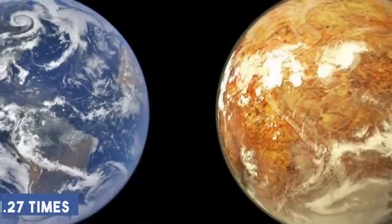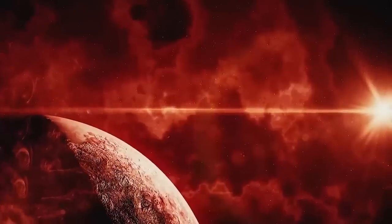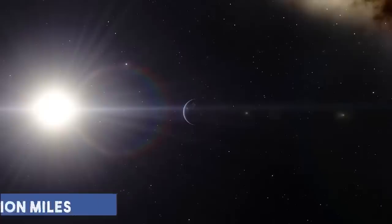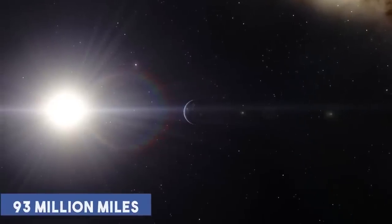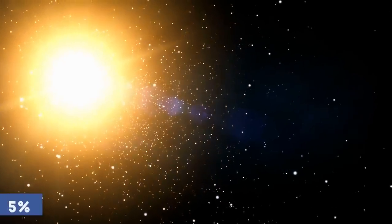1.27 times the size of Earth is Proxima b. The distance between Proxima b and its sun is 4.6 million miles, compared to 93 million miles for our sun. Because of this, it is 5% farther from our sun.